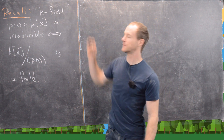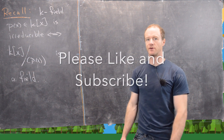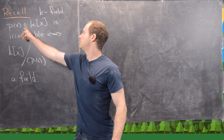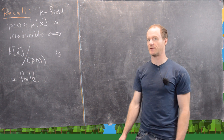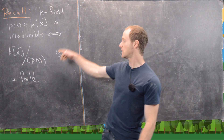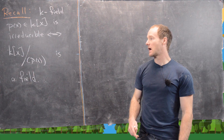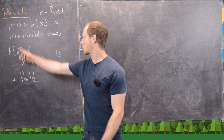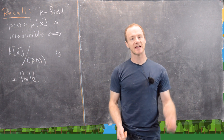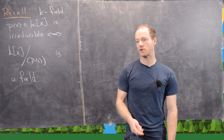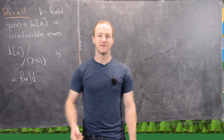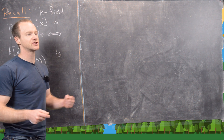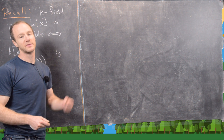Previously we proved the following fact: if you have a field k and the polynomial ring k[x], then p(x) in k[x] is irreducible if and only if k[x] mod the ideal generated by p(x) is a field. This quotient ring being a field gives us a nice way of creating new fields from old fields, and this is actually the general strategy for constructing all finite fields.